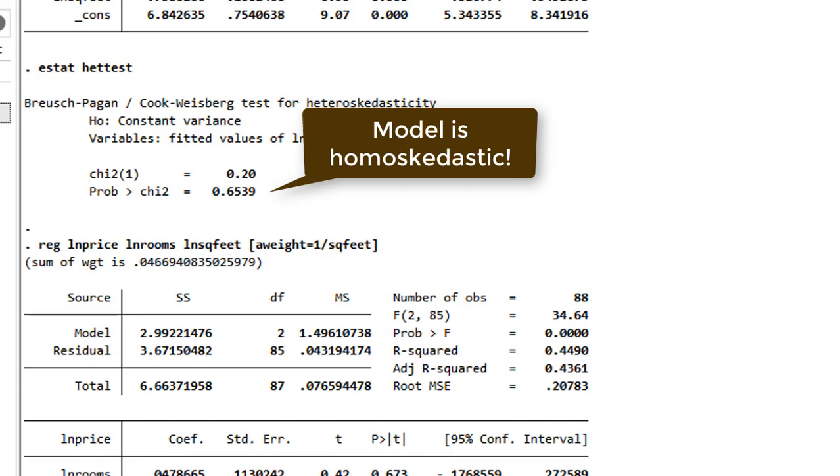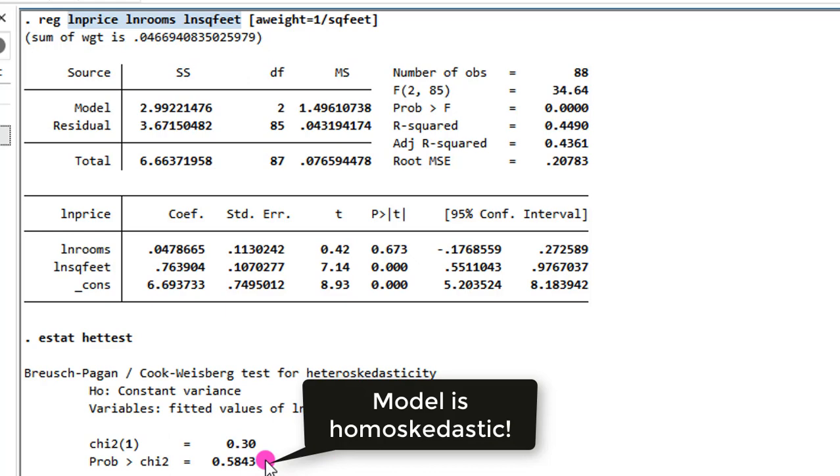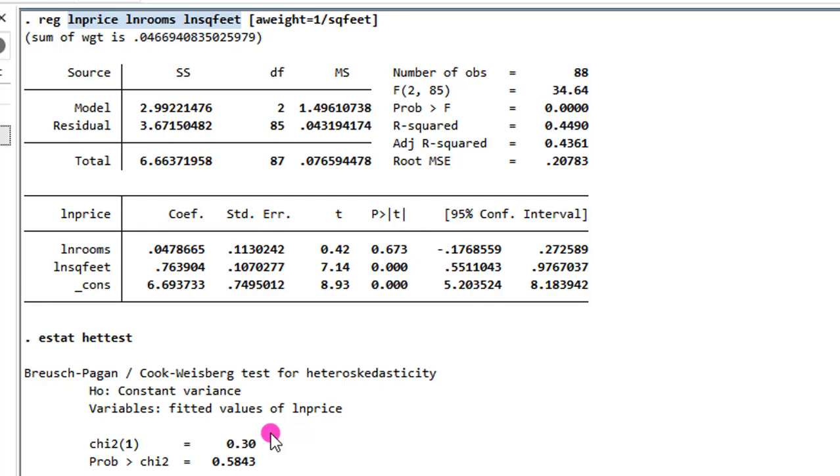So lastly, let's consider a log log model with the attached weights. The p-value of the test statistic is 0.5843, clearly telling us that we cannot reject the null hypothesis of homoskedasticity. So the model now is homoskedastic. So again, you can easily correct heteroskedasticity by using either the functional form of the model or the GLS or weighted least squares approaches.